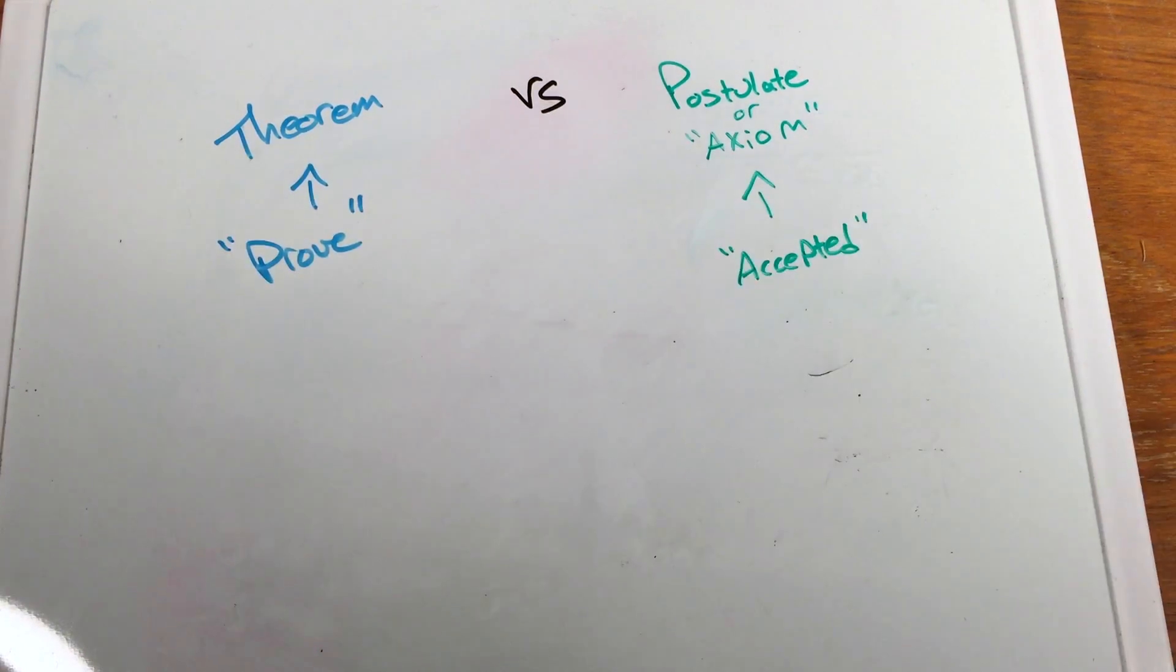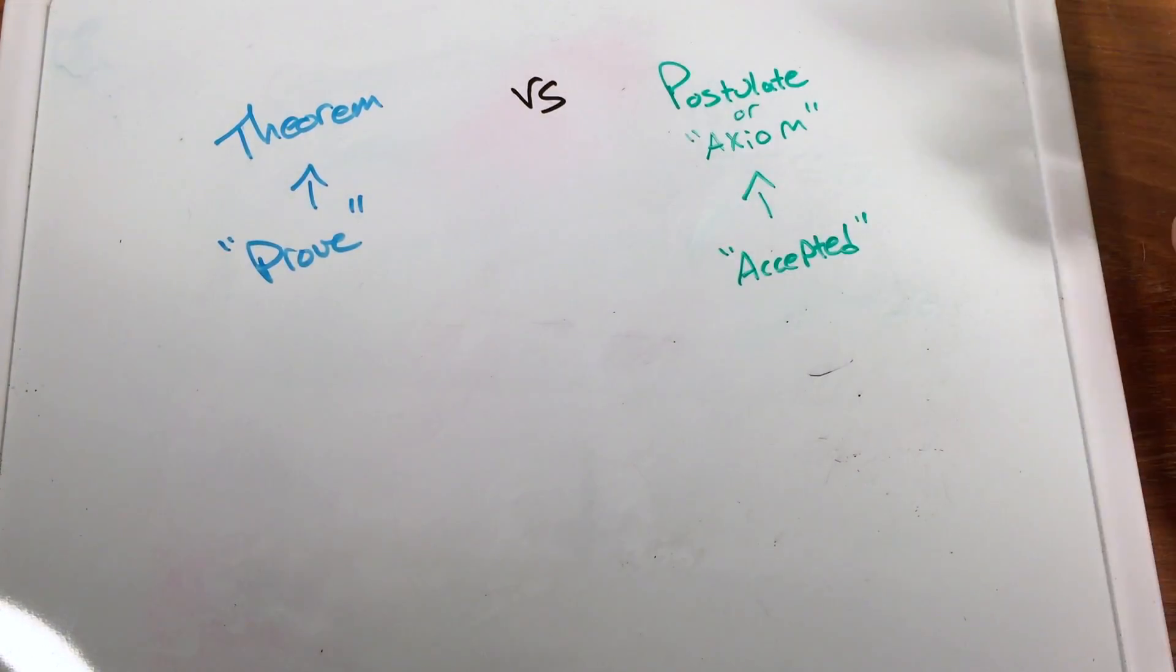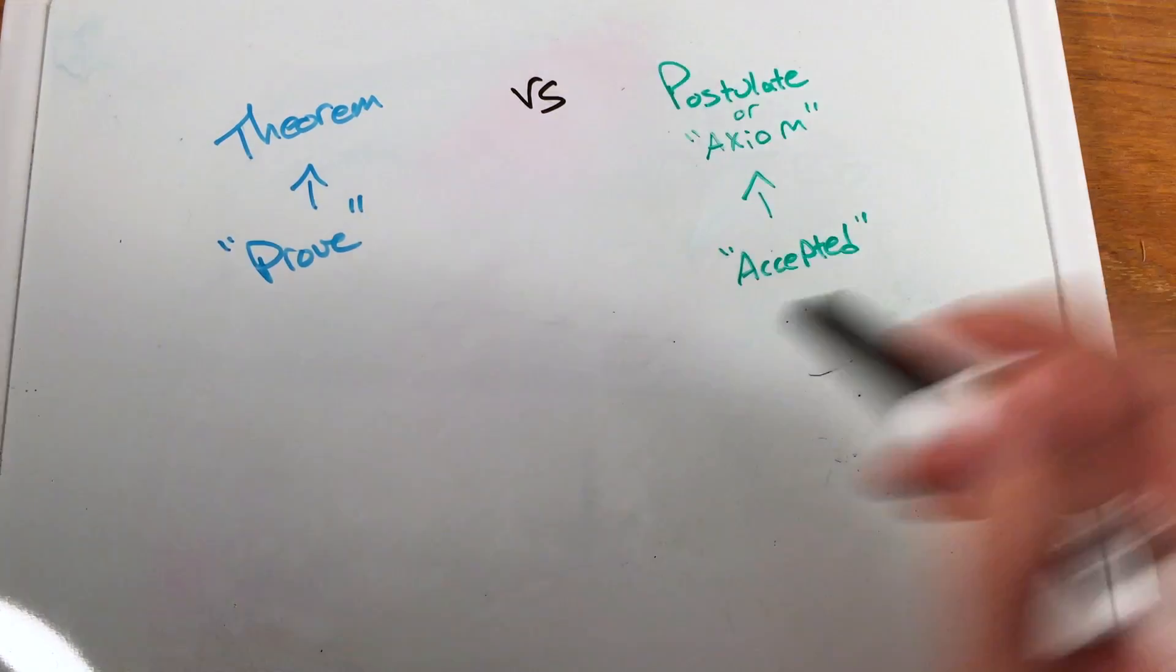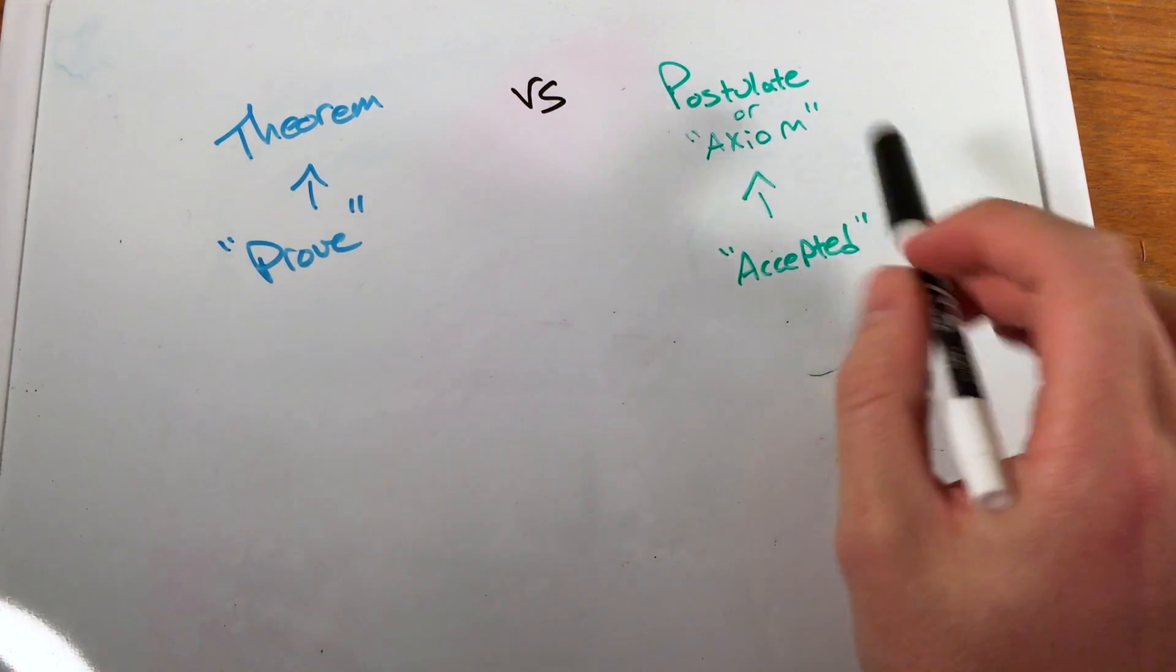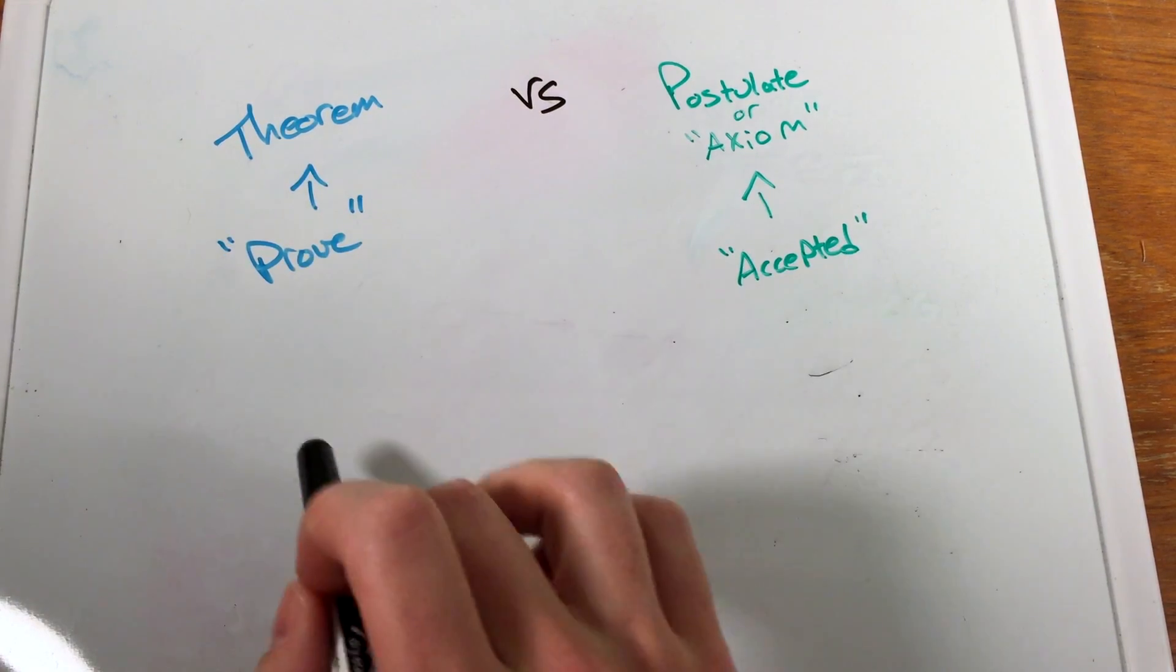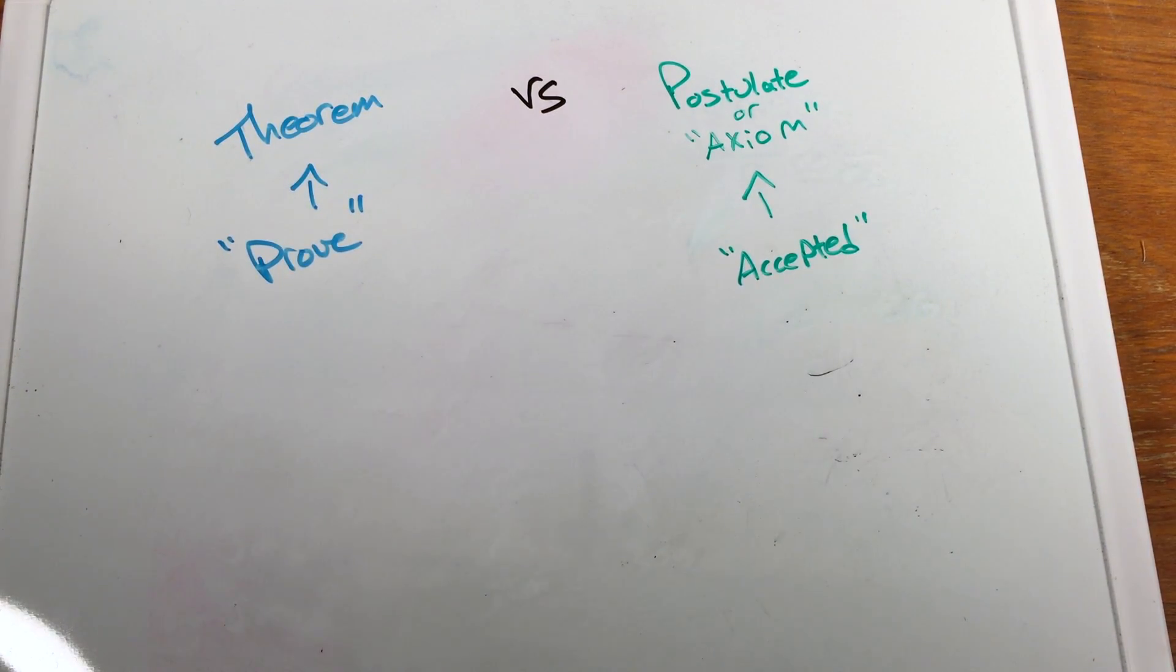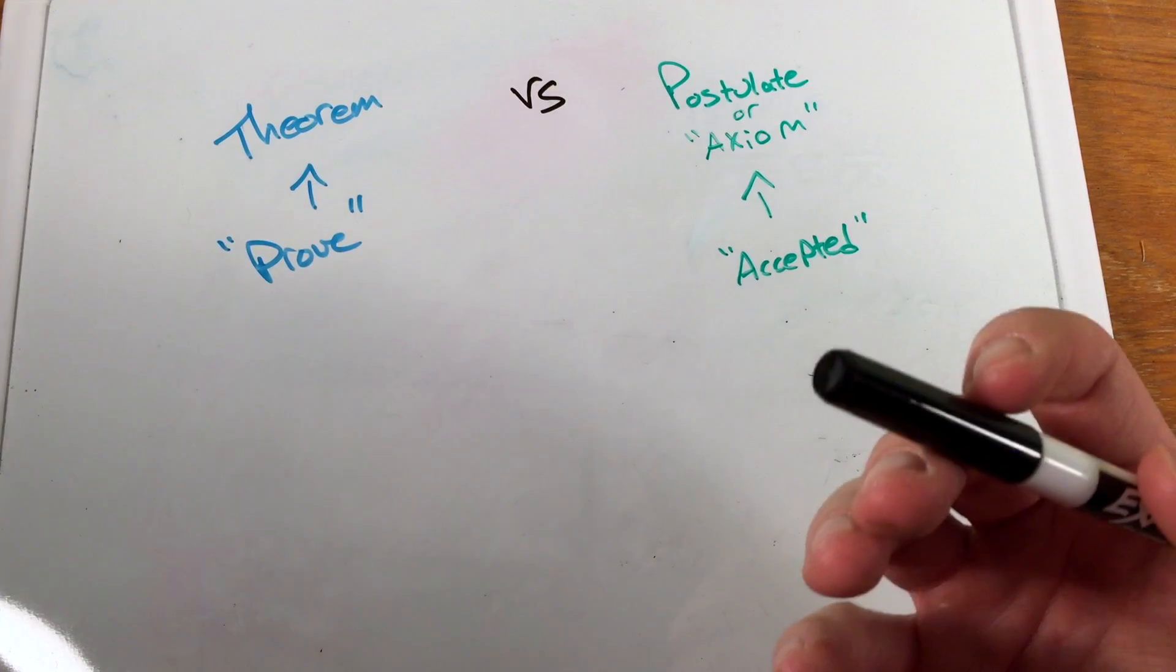But again, we can probably think of postulates as the building blocks or the axioms, both terms are used interchangeably, versus a theorem. So a lot of times these are the building blocks for our theorems, and then once we've proven something to be true,